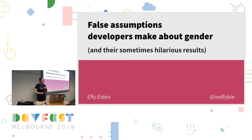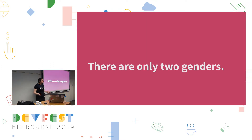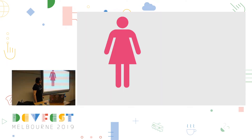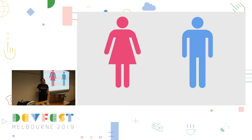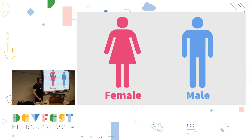Before we dive straight into the assumption-busting, let's establish a few simple facts. There are only two genders, right? It's quite obvious, straightforward. And as we all know, those two genders are pink with triangular torso and blue with square torso — better known as female and male.